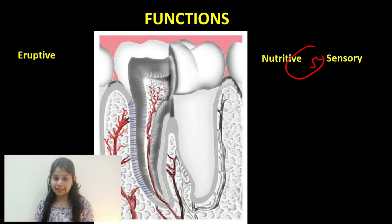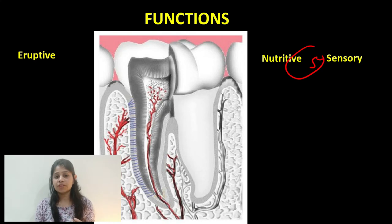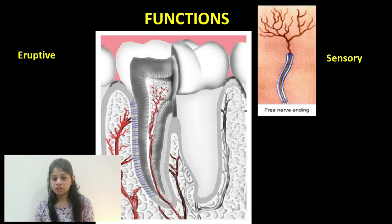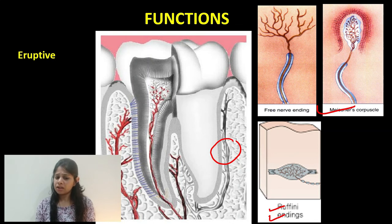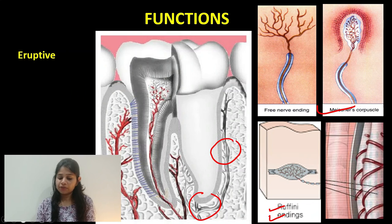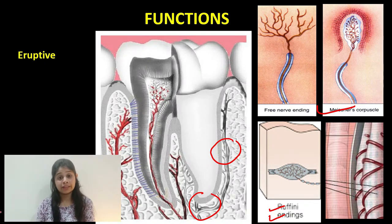The last function is the sensory function. When we chew food, we can differentiate between a soft food like a banana and a crispy substance like chips — this differentiation is brought about by receptors in the periodontal ligament. These include: free nerve endings, which carry pain sensation; Meissner's corpuscles, which are mechanoreceptors seen in the middle third of the root; Ruffini-like mechanoreceptors, seen in the apical area; and spindle-like pressure and vibratory receptors found along the periodontal ligament fibers themselves. The cell bodies of all these receptors are located in the trigeminal ganglion.